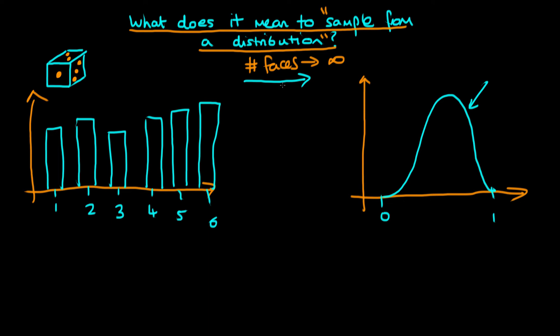So we can kind of understand what is meant by sampling from an object here, a die, whether it be a standard die or a slightly weirder one. But what does it actually mean to sample from a distribution?